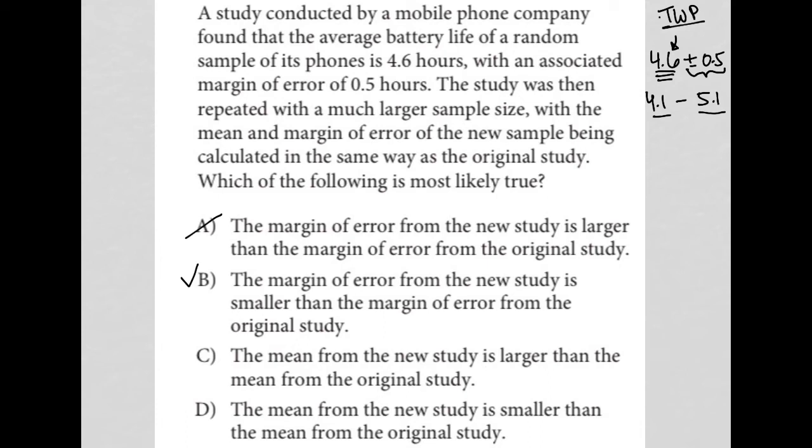But let's give the other options a chance here as well. Choice C, the mean from the new study is larger than the mean from the original study. Now, that could be true. I don't know if it's true or not. There really isn't anything from the word problem that tells me that the mean was off. So I kind of still like B being a better answer than C in this case. So I'm going to cross C out.